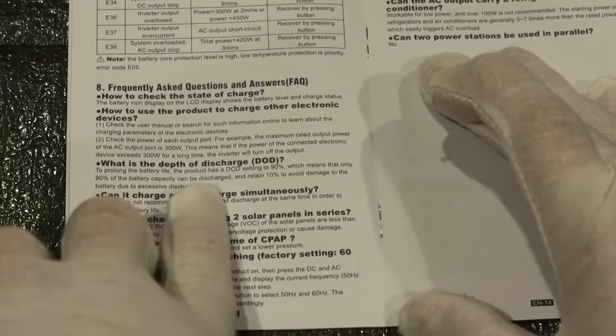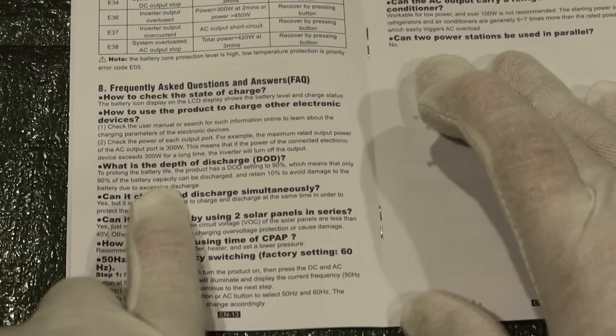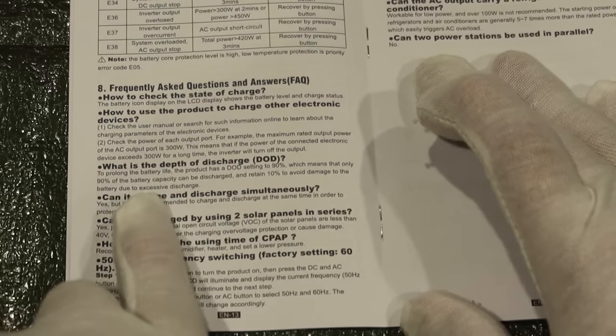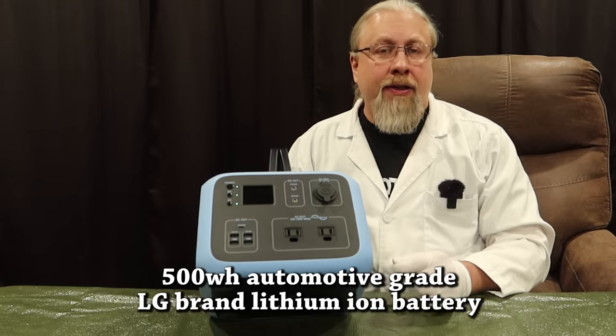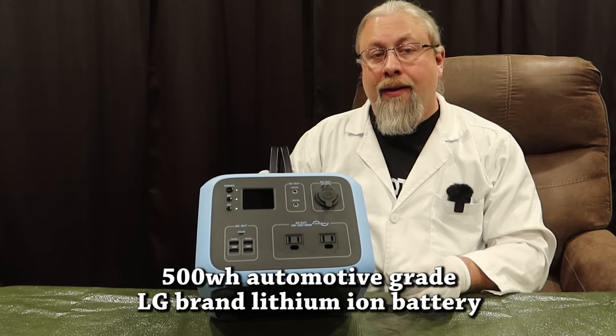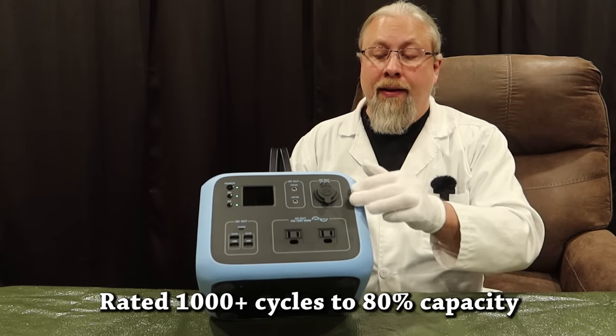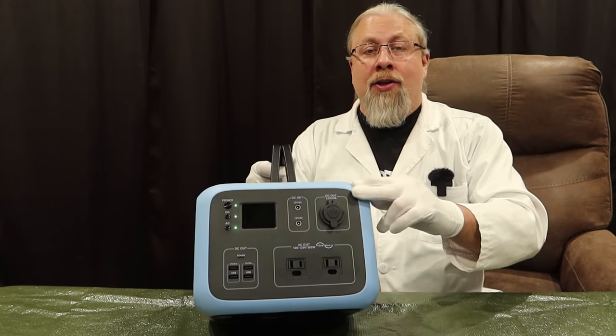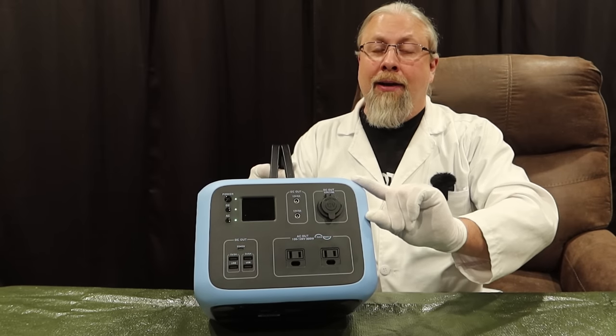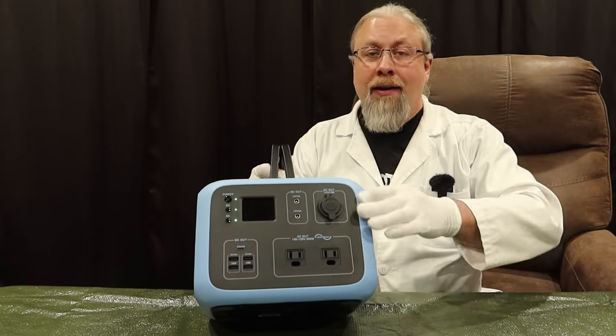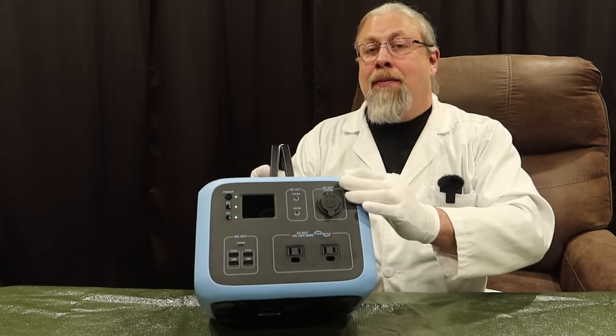What is the depth of discharge? It says 90%. So that means they do set aside 10% of the battery capacity to avoid damage to the battery. So what's inside the AC50S? It sports a 500 watt hour automotive grade LG brand lithium ion battery rated at 1000 cycles to 80%. This is not like lead acid where after 500 cycles you just have to throw the battery away. This will be good for many, many years.